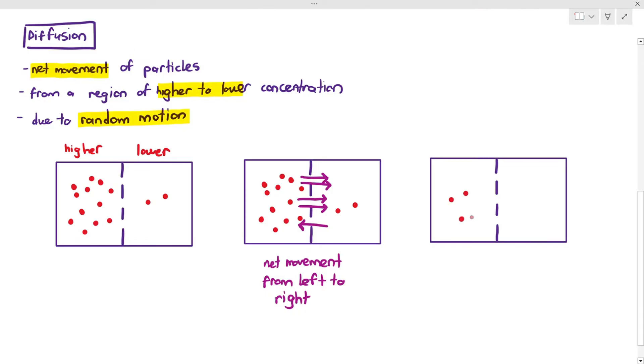If you give it enough time, you can see that in the third diagram on the right, the amount of particles on the left and right are now equal. So we would say that it has achieved equilibrium.